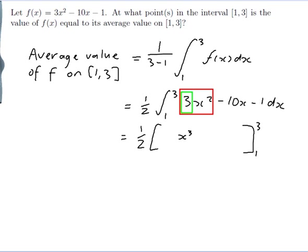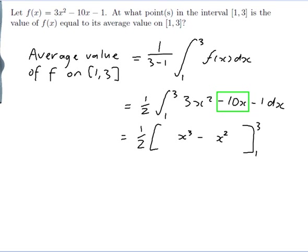The next term is minus 10x. The minus 10 stays there, x goes from x to the power of 1 to x to the power of 2, and I divide by the new power — so 10 divided by 2 gives 5, making it minus 5x squared. Finally, the last term is minus 1, and any constant goes to that constant times x, so minus x.